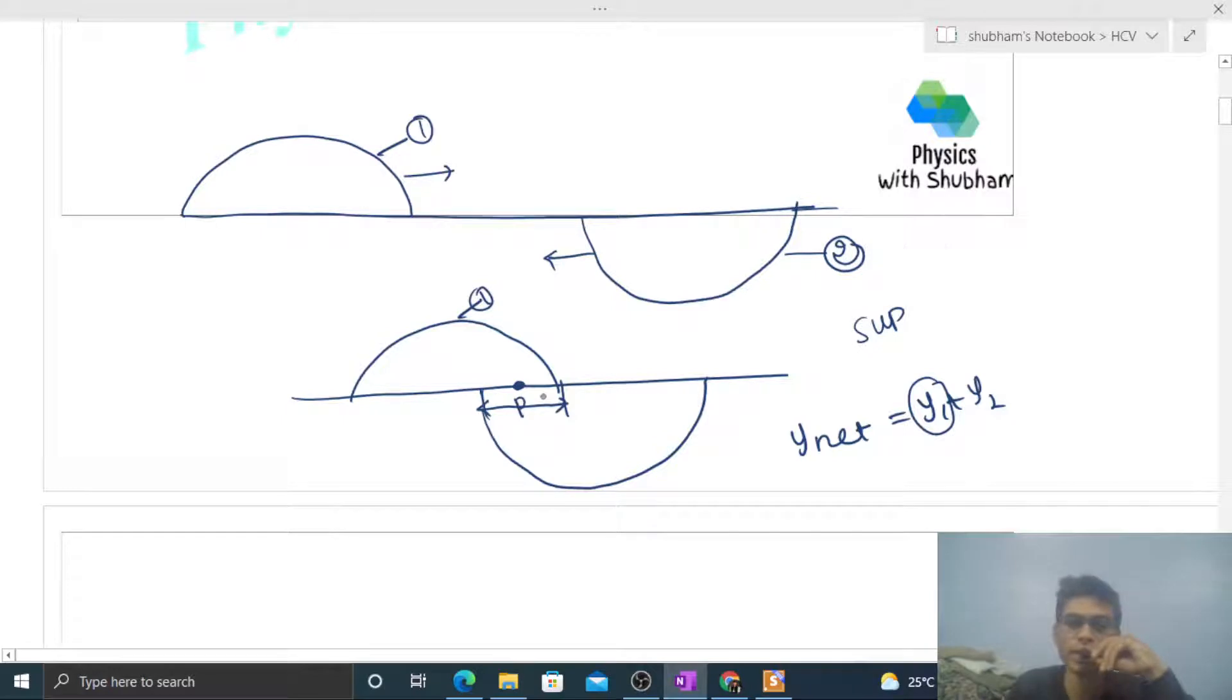y1 kya hai? Displacement of the particle because of the first wave. Let me take any particle, let's say yeh particle P hai. Iske displacement ki baat karein. So iska jo net displacement aayega that will be y1. y1 is this one, that is the displacement of the particle because of the first wave, and y2 is the displacement of the particle because of your second wave.